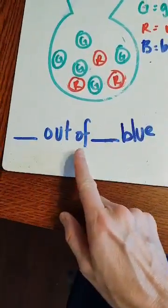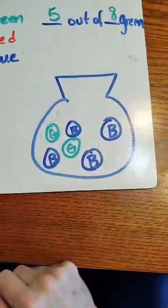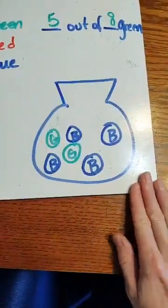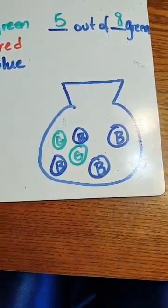Blank out of blank are blue. So let's look. What's our first? We know goes in the first blank is the part. The part. So how many are blue?